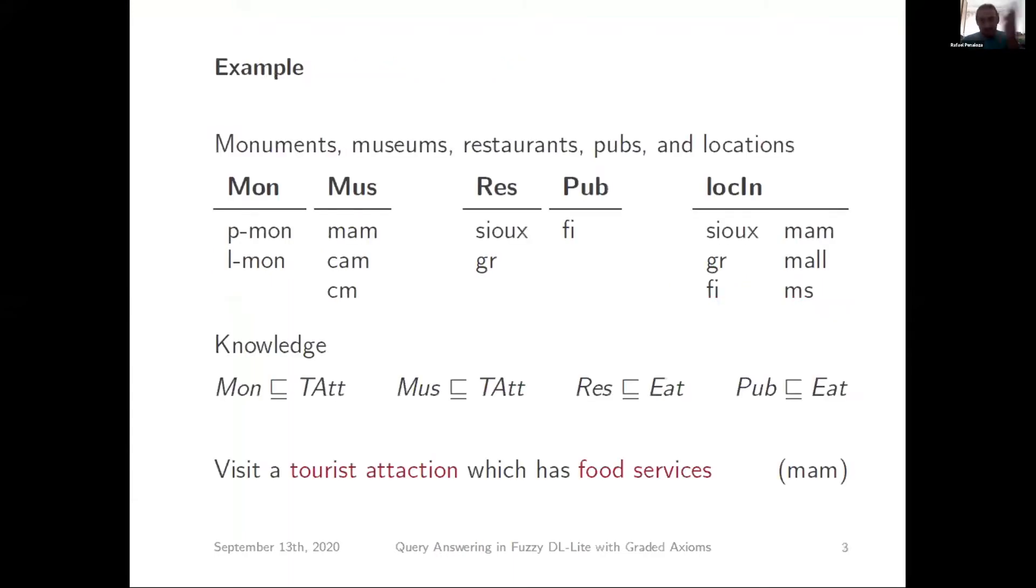Just a very simple example. Say we have a database with monuments and museums, and knowledge that says monuments are tourist attractions and museums are tourist attractions, and restaurants and pubs which are places to eat. If we ask for a query like finding a tourist attraction with a food service inside, we can get that the modern art museum satisfies this on this data.